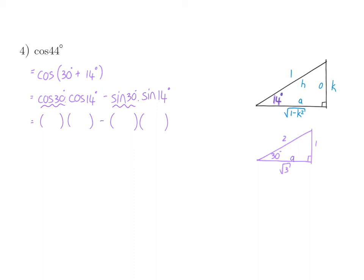Cos of 30 is my adjacent over hypotenuse, so that will be square root of 3 over 2, and sin is opposite over hypotenuse, 1 over 2. Cos of 14 is the square root of 1 minus k squared over 1, and sin of 14 is k over 1. In my first term, I can multiply the roots to get the root of 3 minus 3k squared on 2, and in my second term, k over 2. I can put all of this on a common denominator of 2, and I will have the root minus k on 2.